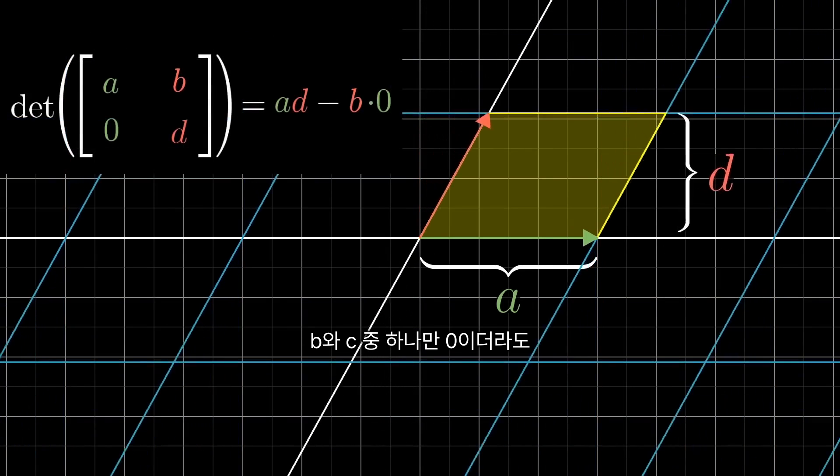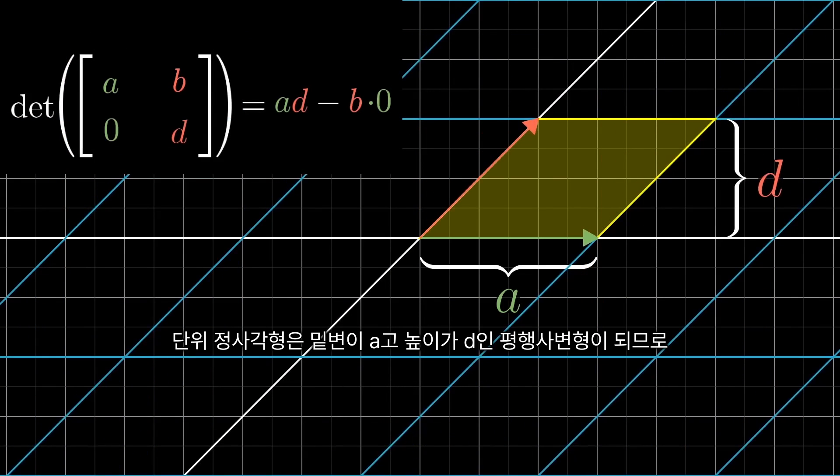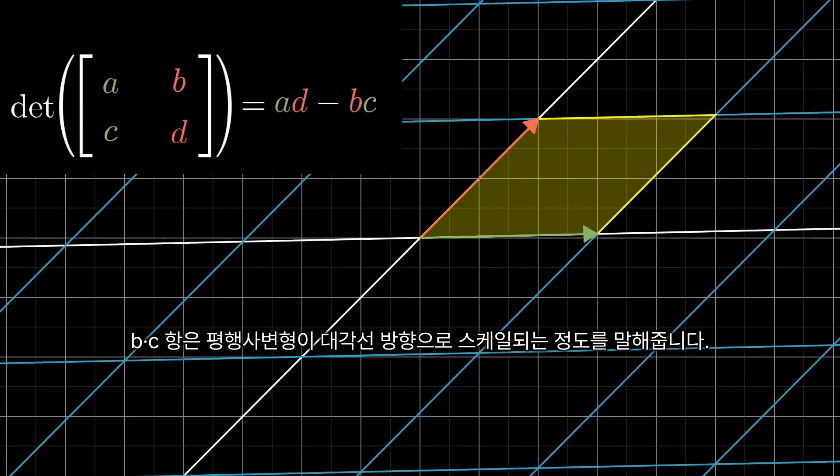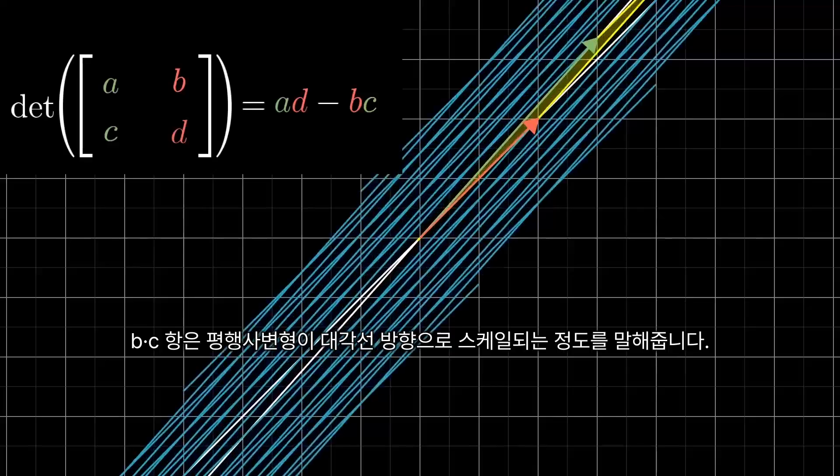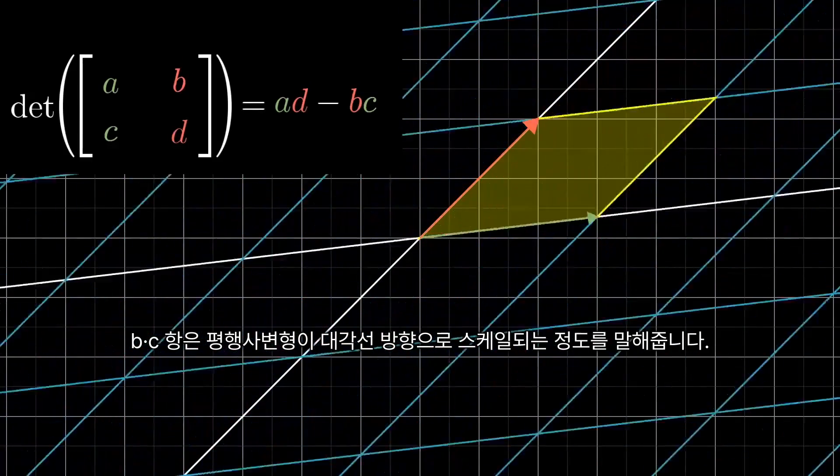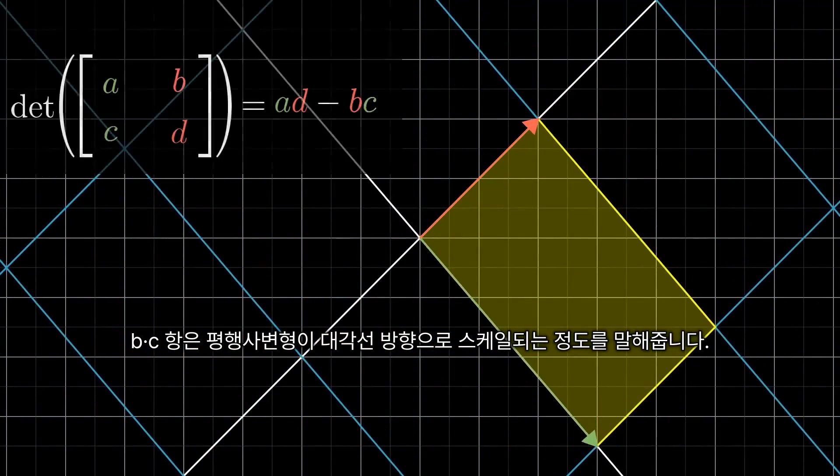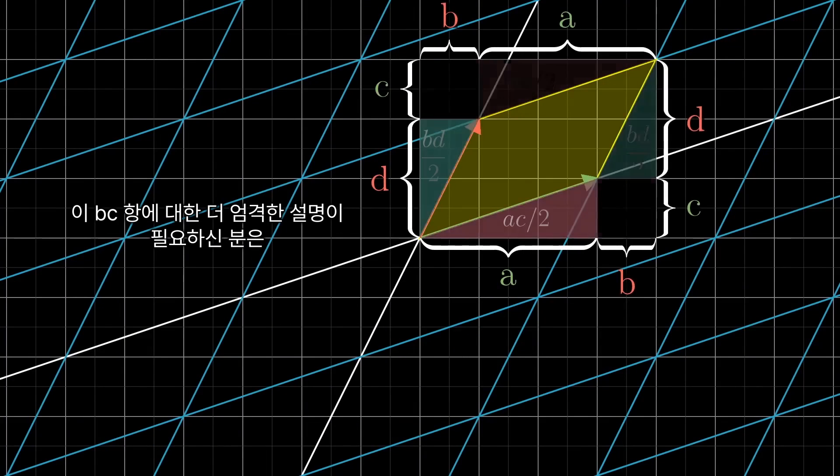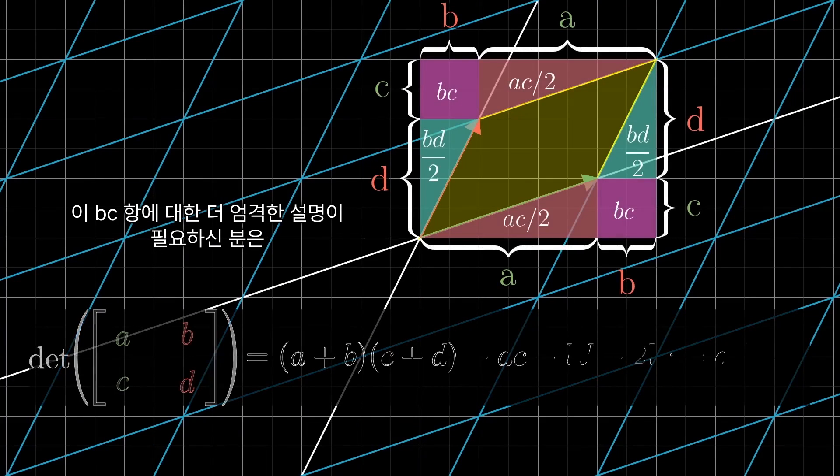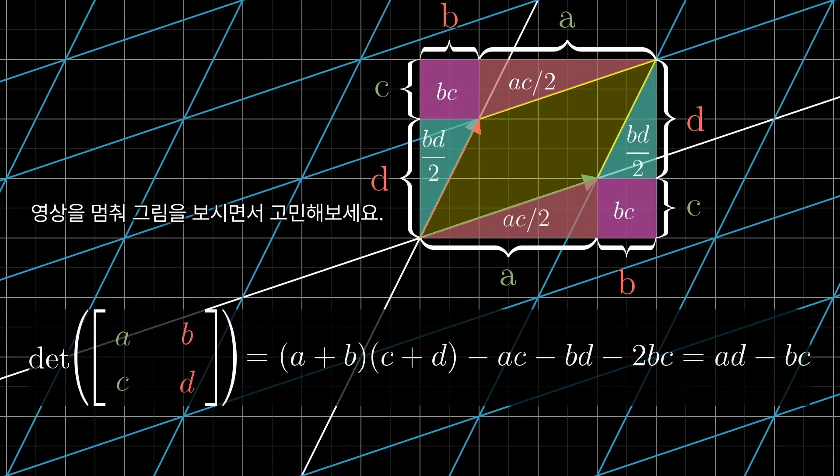Even if only one of b or c are zero, you'll have a parallelogram with a base a and a height d, so the area should still be a times d. Loosely speaking, if both b and c are non-zero, then that b times c term tells you how much this parallelogram is stretched or squished in the diagonal direction. For those of you hungry for a more precise description of this b times c term, here's a helpful diagram if you'd like to pause and ponder.